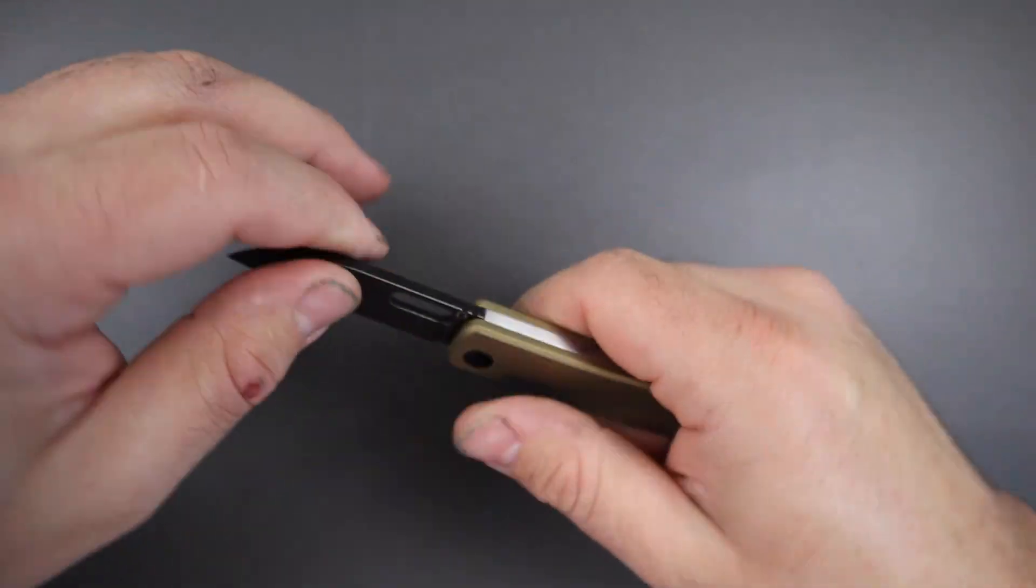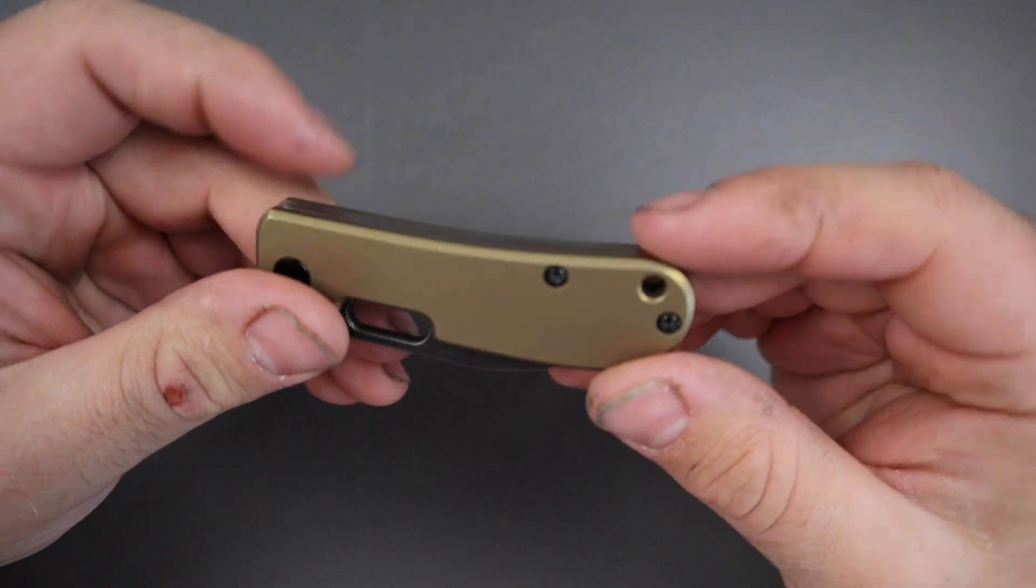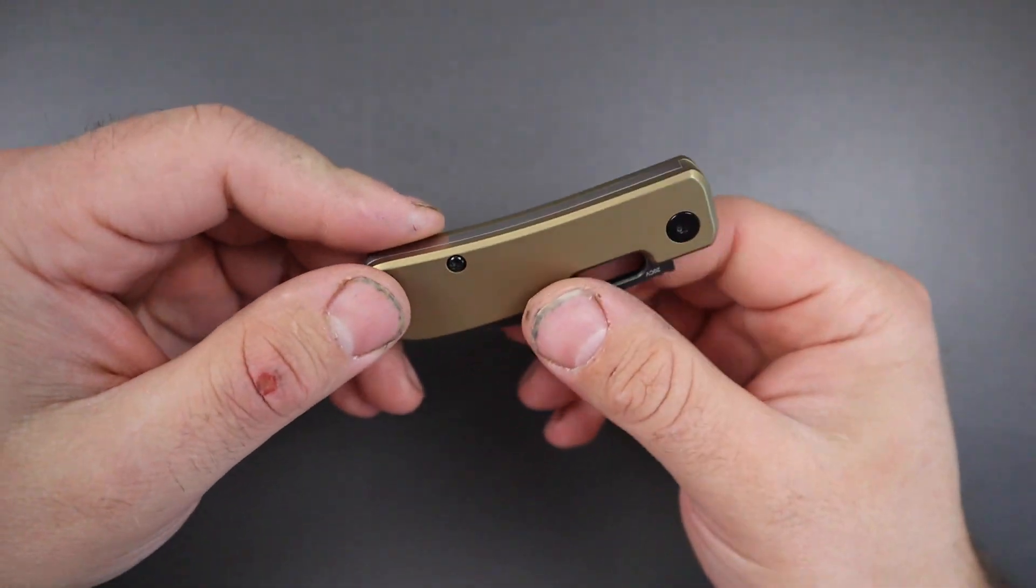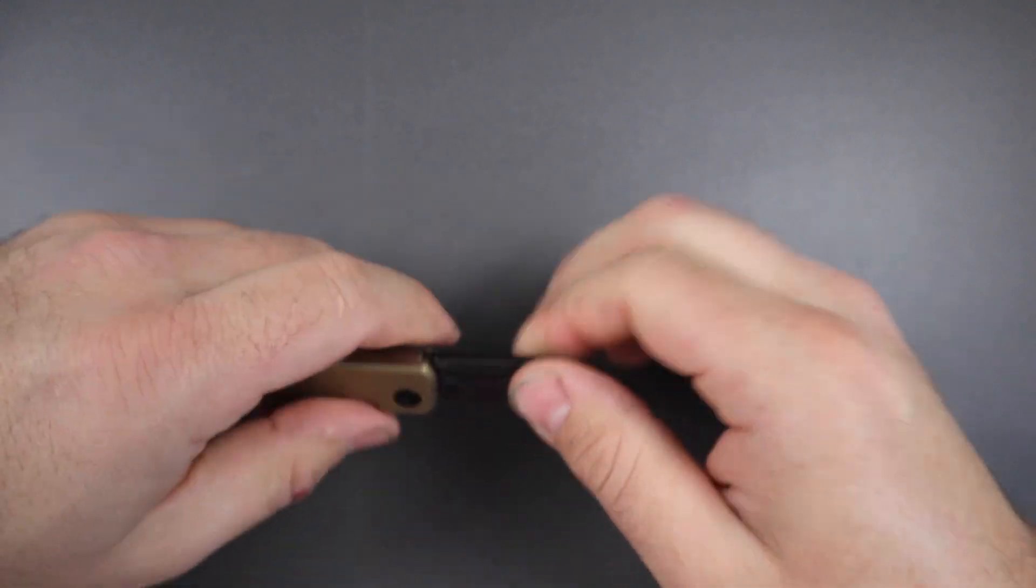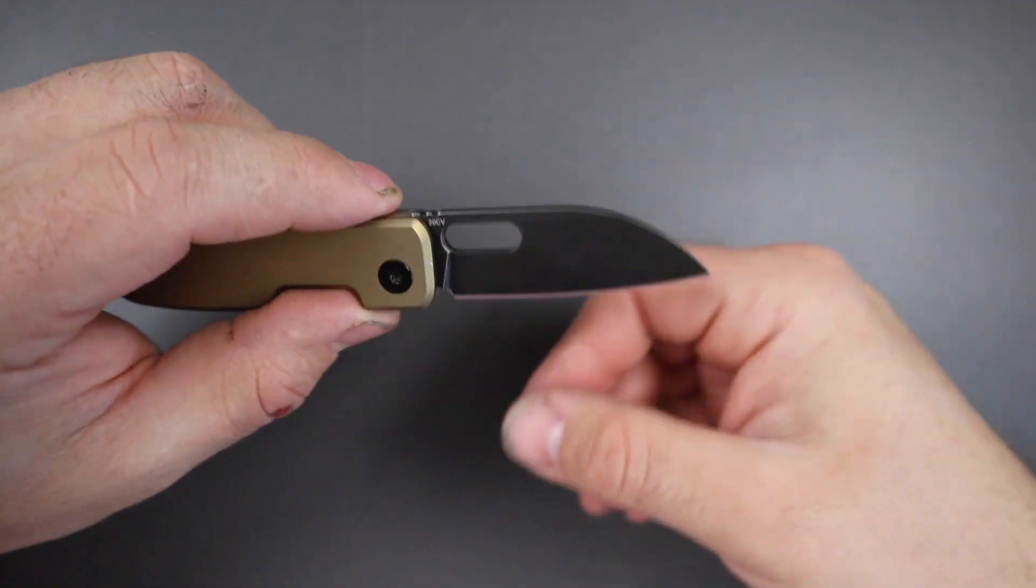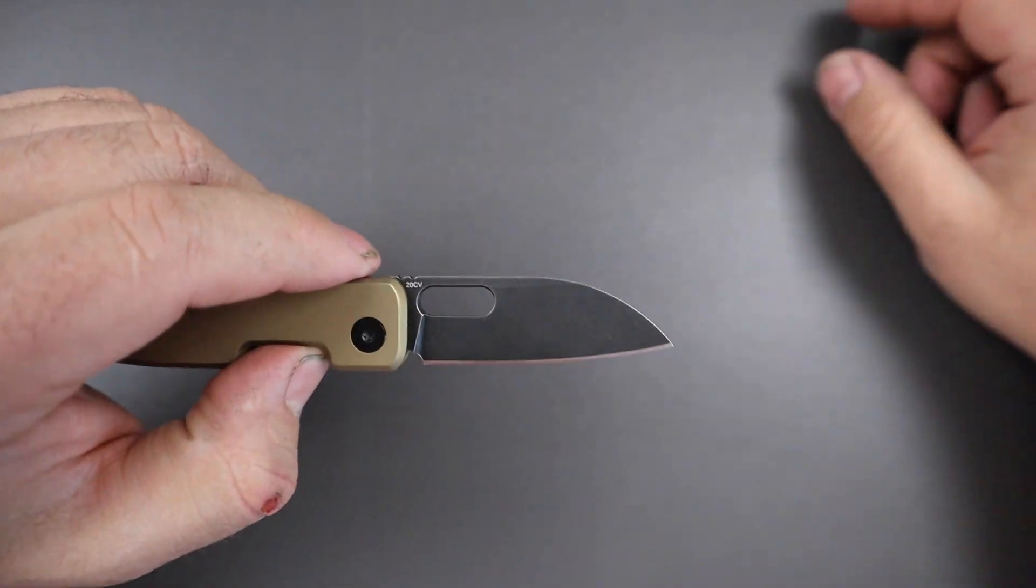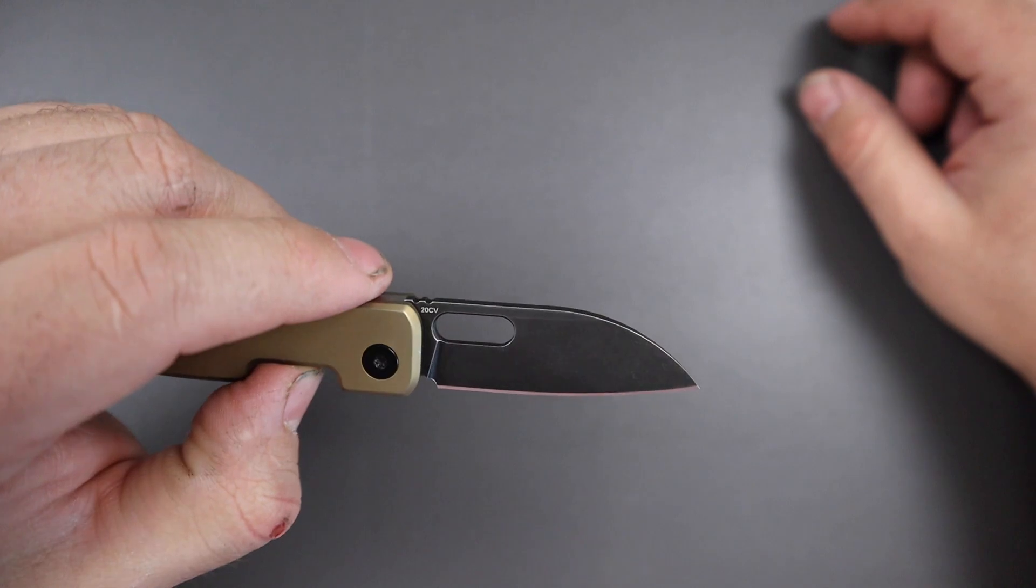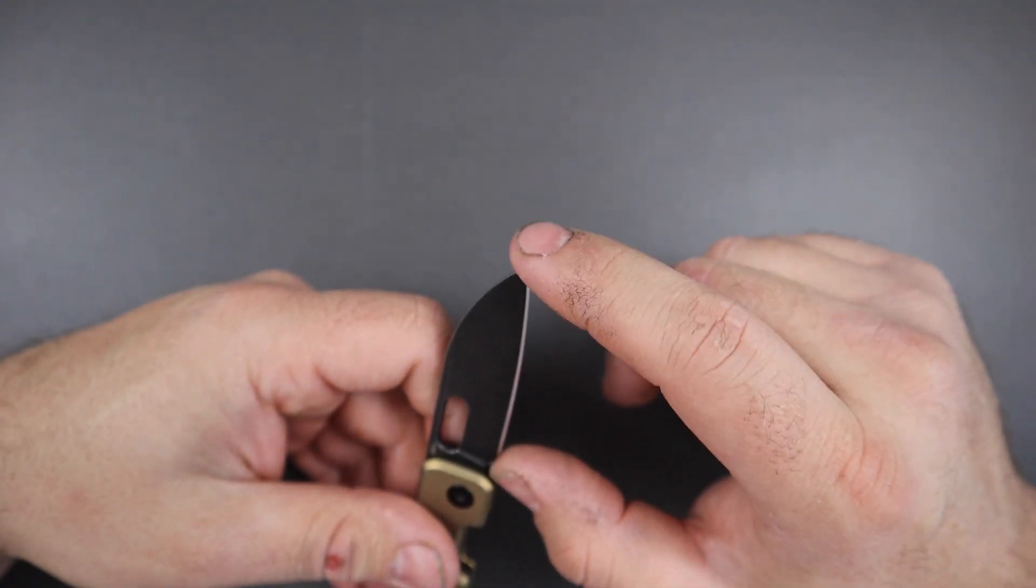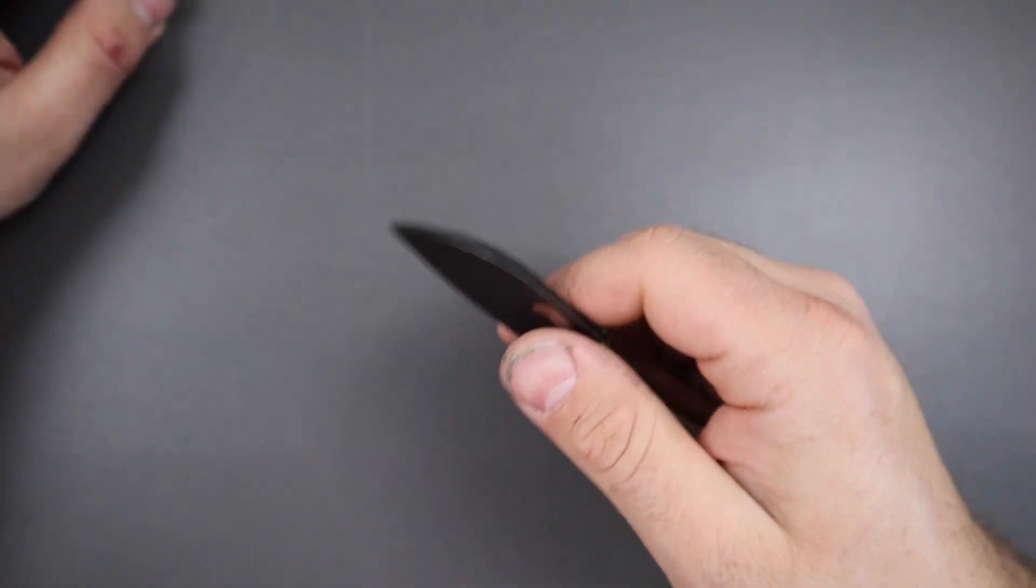Flush in open position, flush in the half stop, and flush close as well. So QSP definitely did a pretty good job on this one. This has, like I mentioned, a nice flat ground, pretty much just a scaled down Variant blade. This one is CPM 20CV, so you got a nice premium steel. You have a little bit over two inches of cutting edge, so definitely enough to get the job done as far as opening packages or something like that.